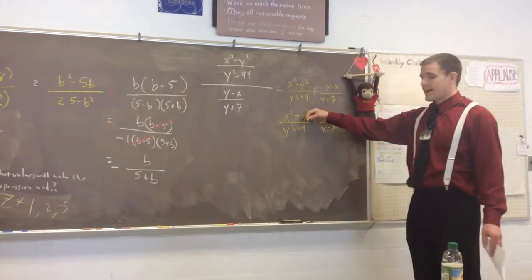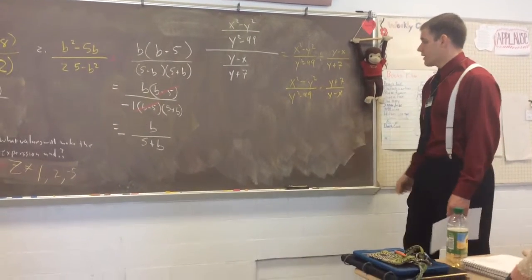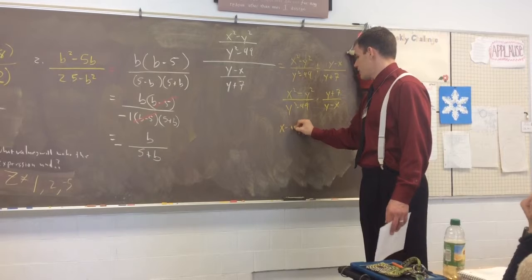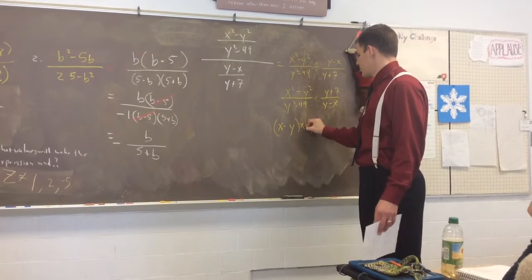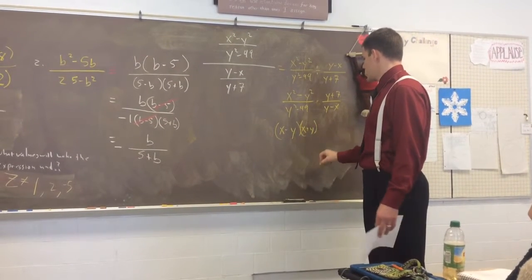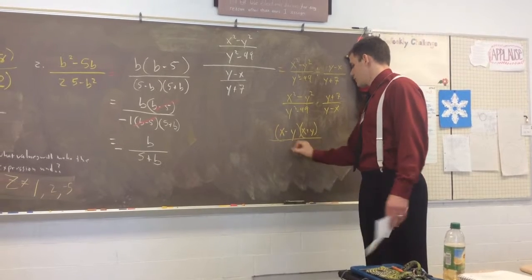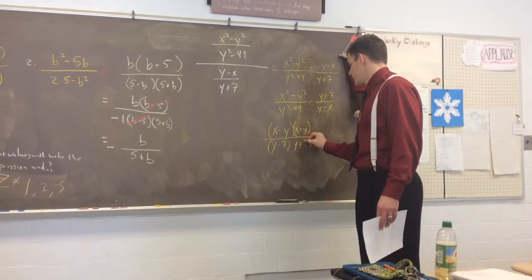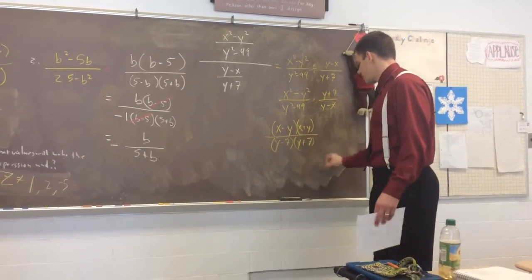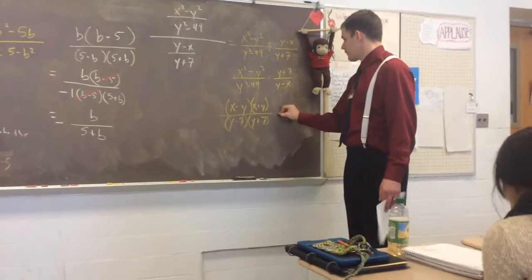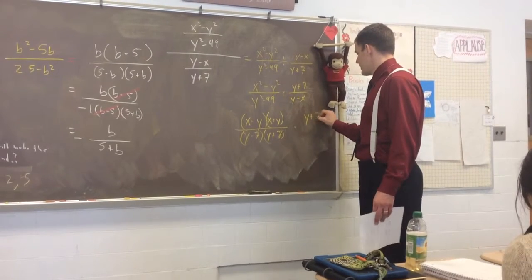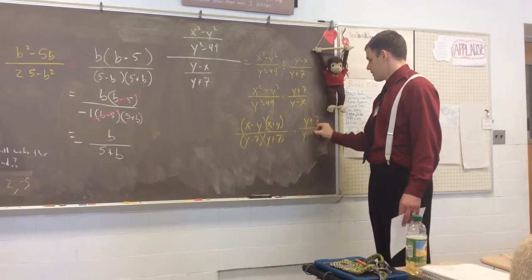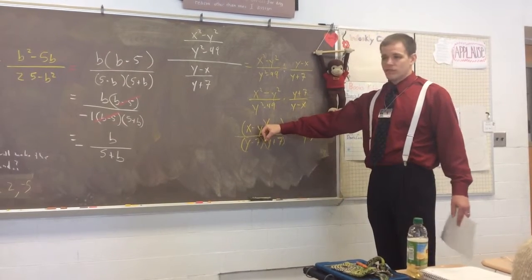So, times y plus 7 over y minus x. Now, we've just got to factor this, factor that, and we're happy. That's the difference of squares: x minus y times x plus y. Y minus 7 times y plus 7. That's also the difference of squares. Y plus 7 over, this is y minus x, but that's x minus y.